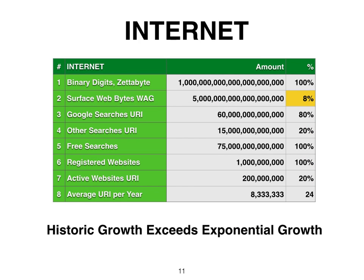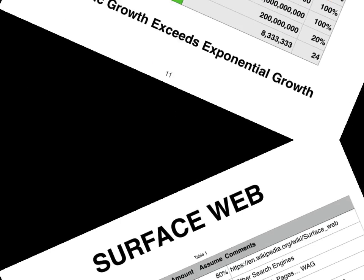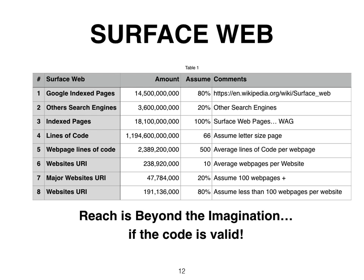The Internet has enjoyed unimagined growth, but everything peaks and reaches a saturation point — for example, Microsoft, website registrations, and Apple. But not Facebook, with over 1 billion users, and even though Mark Zuckerberg speaks Mandarin, they're not in China yet.